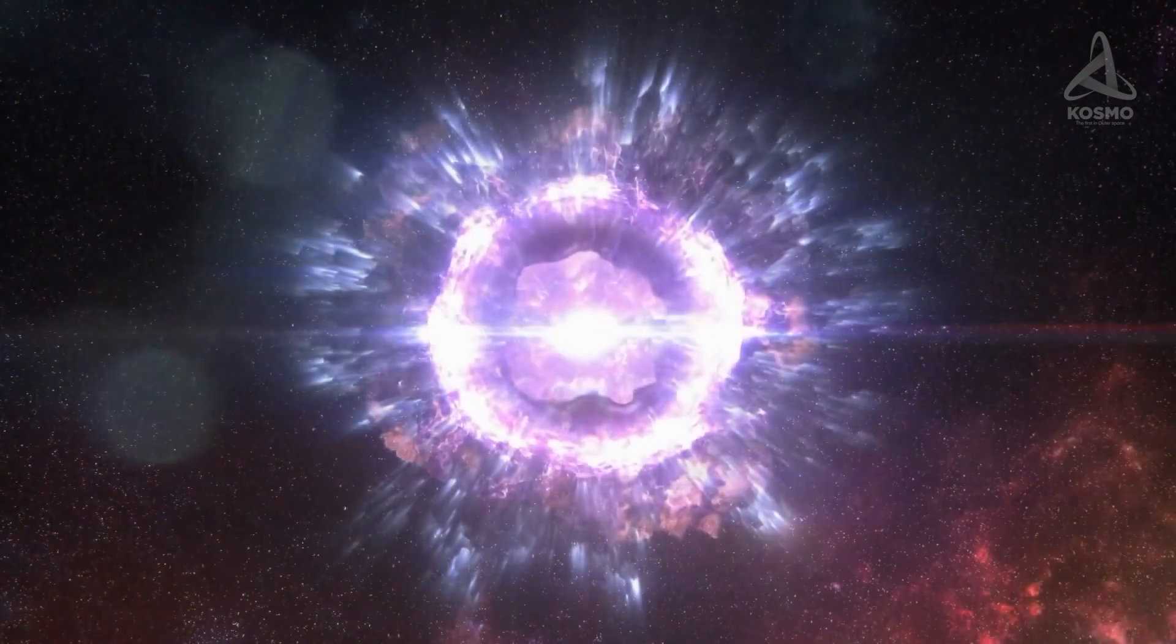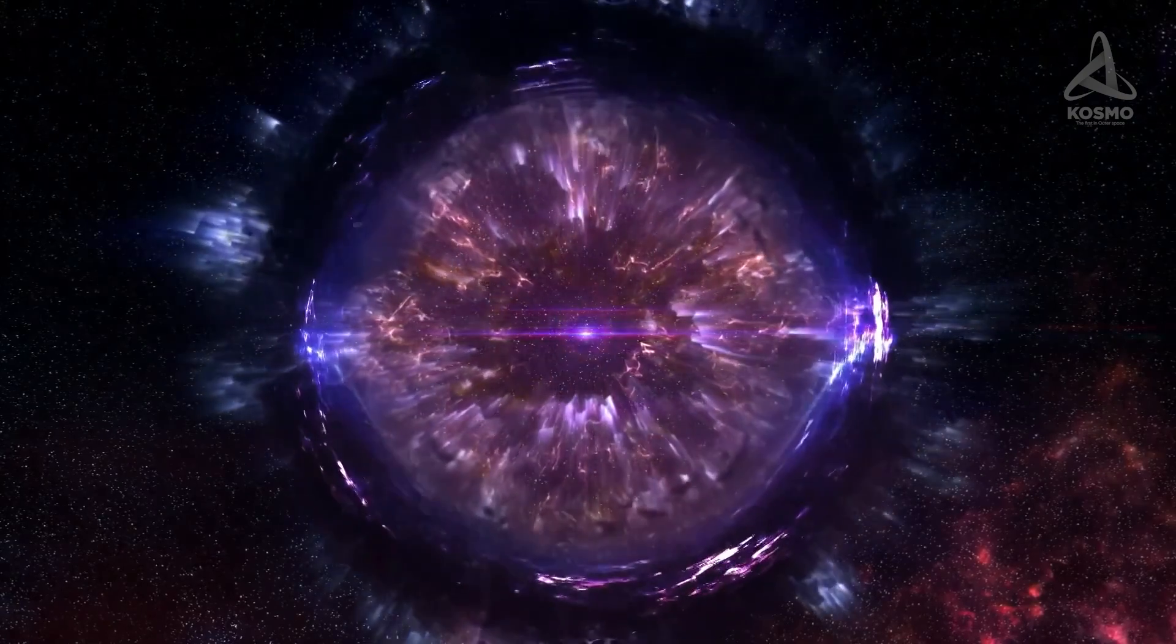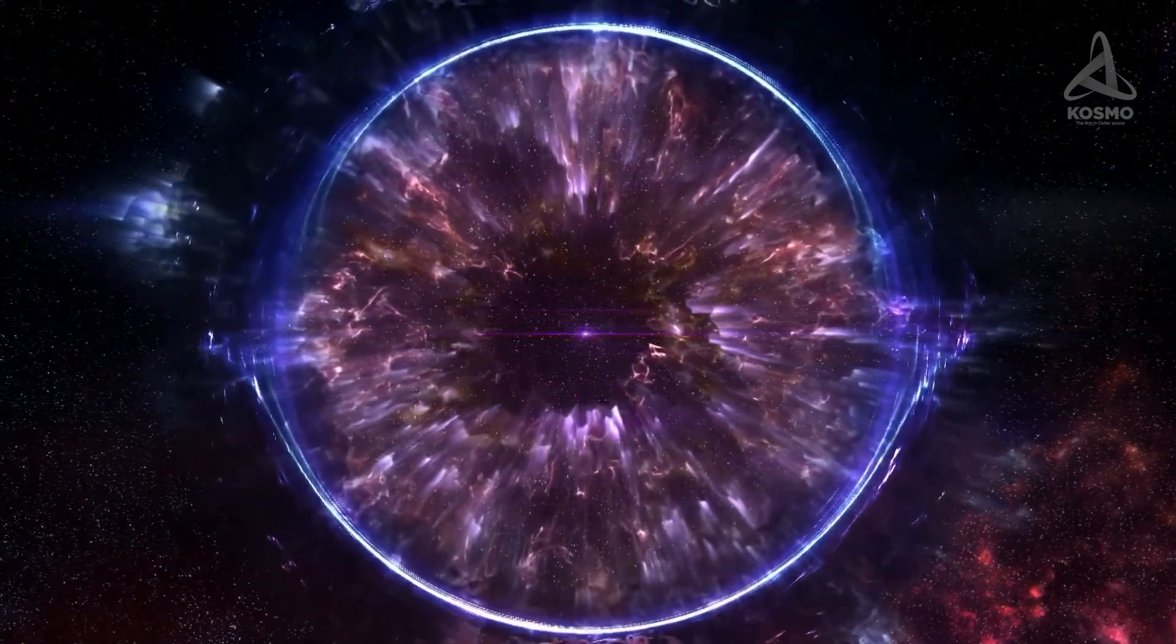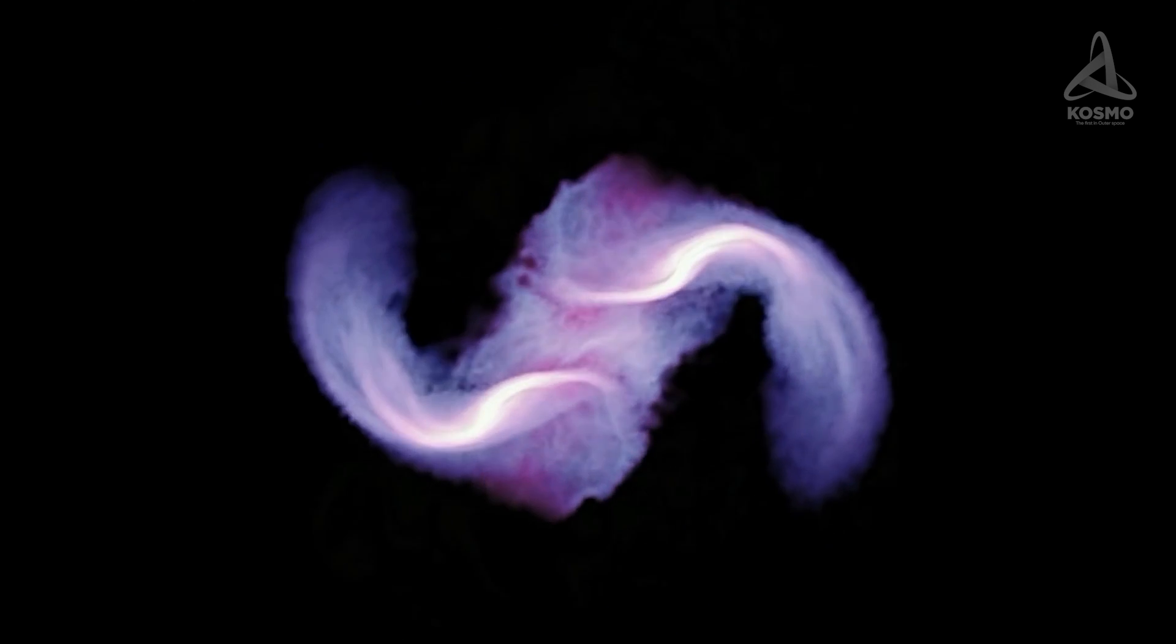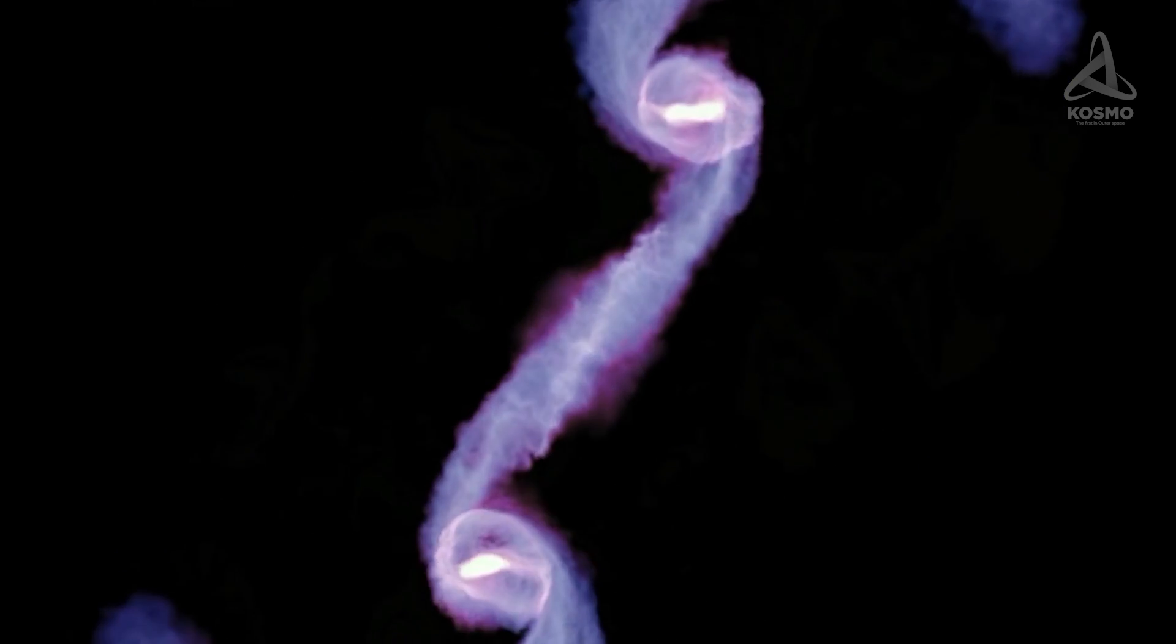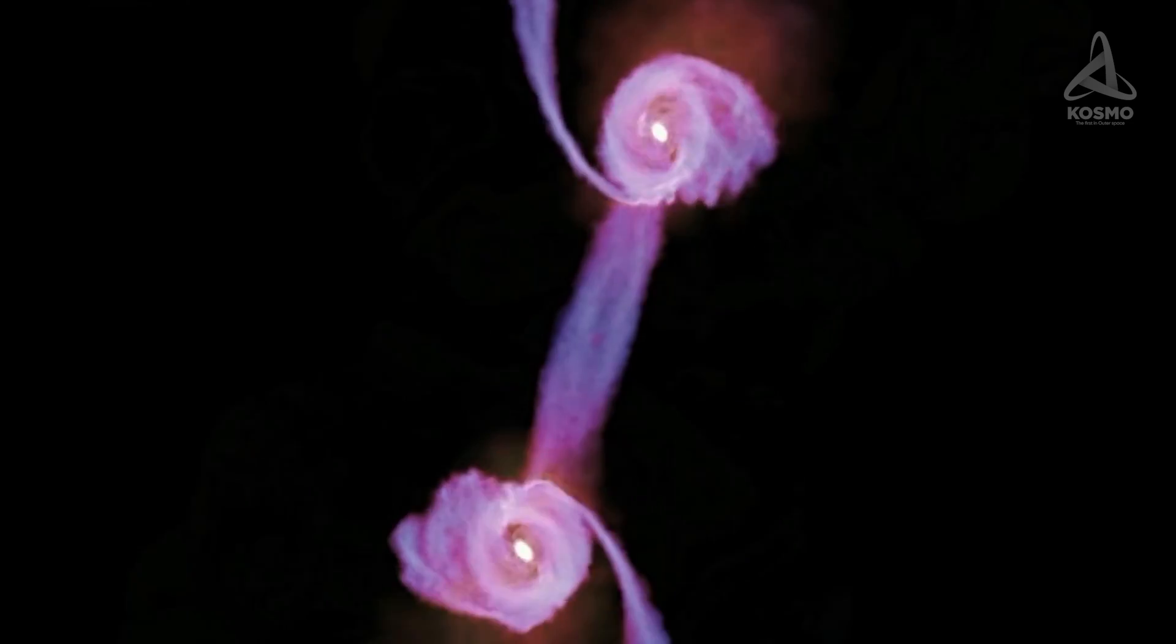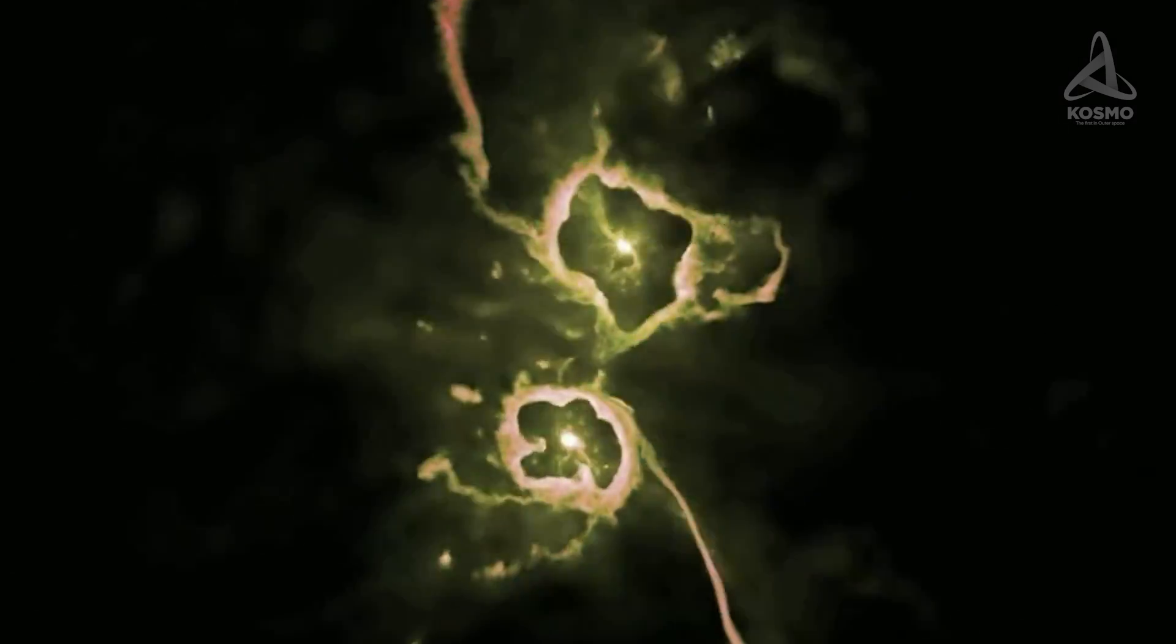The difference in their masses transforms itself into a gravitational energy impulse that disturbs the space around the new space object. A system made up of two black holes may also originate as a result of two galaxies colliding, provided the cores of these are supermassive black holes.